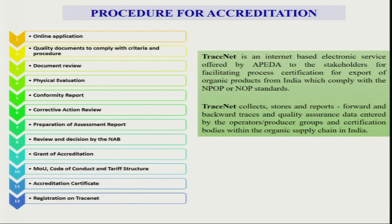For the accreditation procedure, any organization or entrepreneur has to apply through an online application. Quality documents are compared with criteria, then documents are reviewed, after which there is physical evaluation by inspectors. Then corrective action review takes place, an assessment report is prepared, and review and decision are taken by the NAB — National Accreditation Body. Only after that is permission granted; then grant of accreditation is given and an MOU signed, covering code of conduct and tariff structure, after which you receive the accreditation certificate and are allowed to function as a certifying agency.